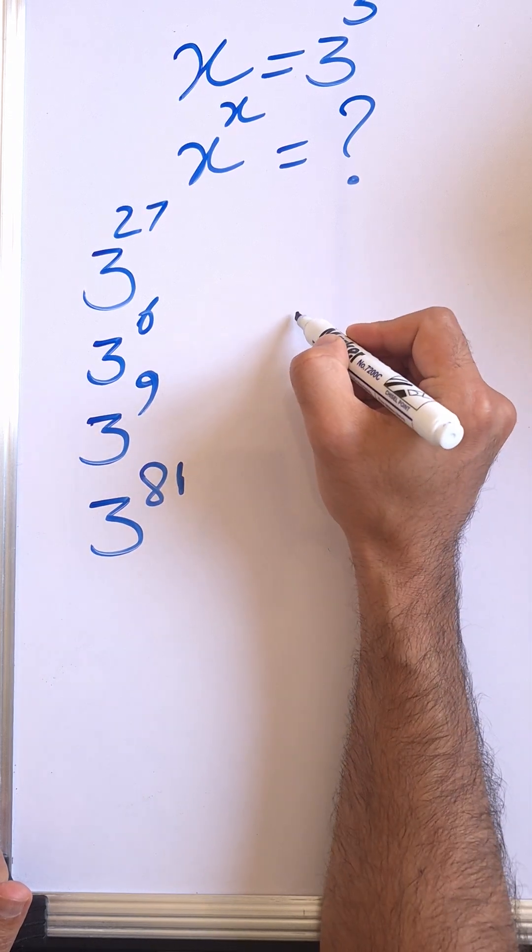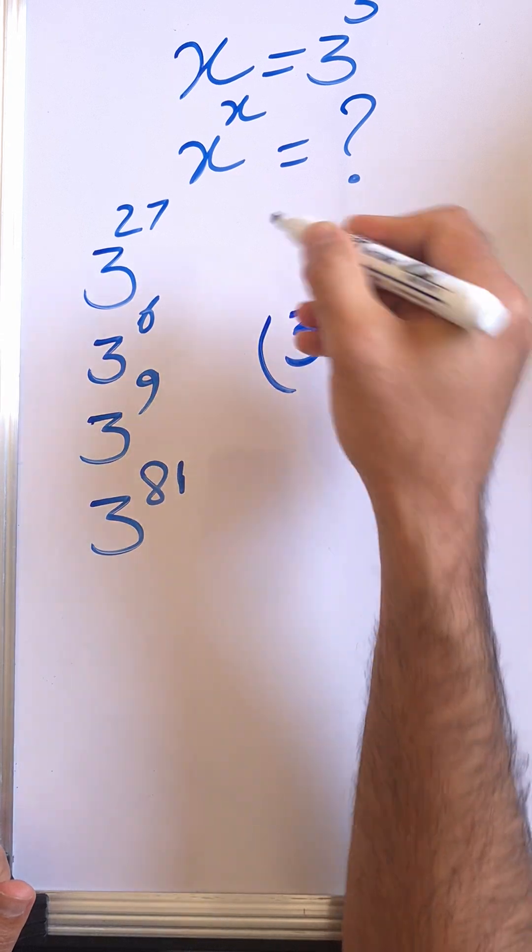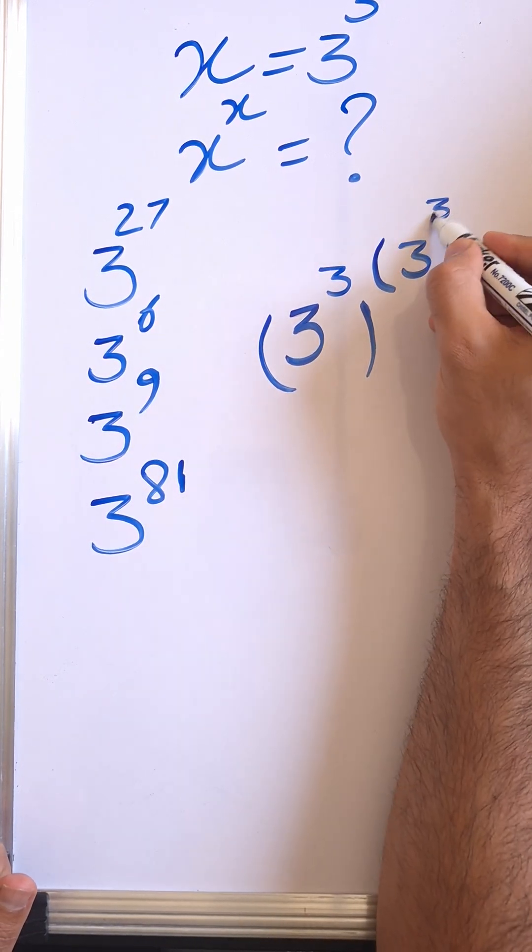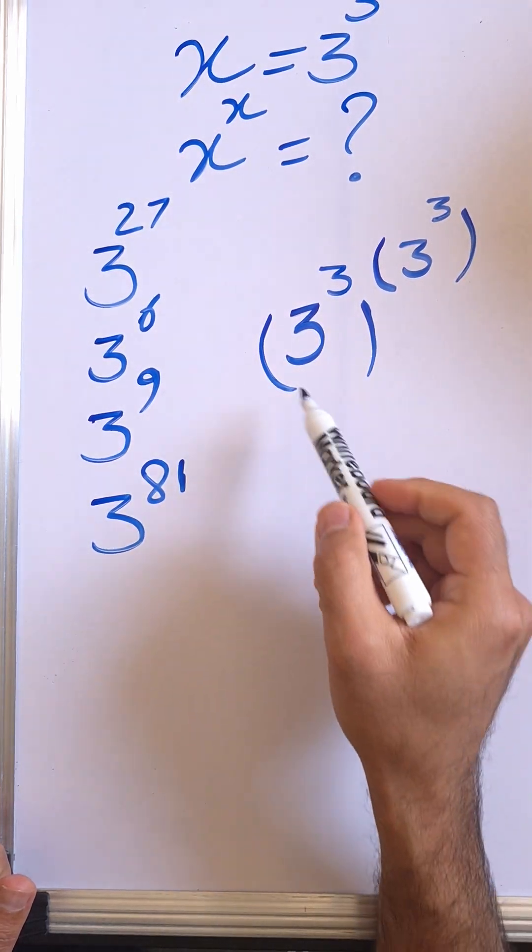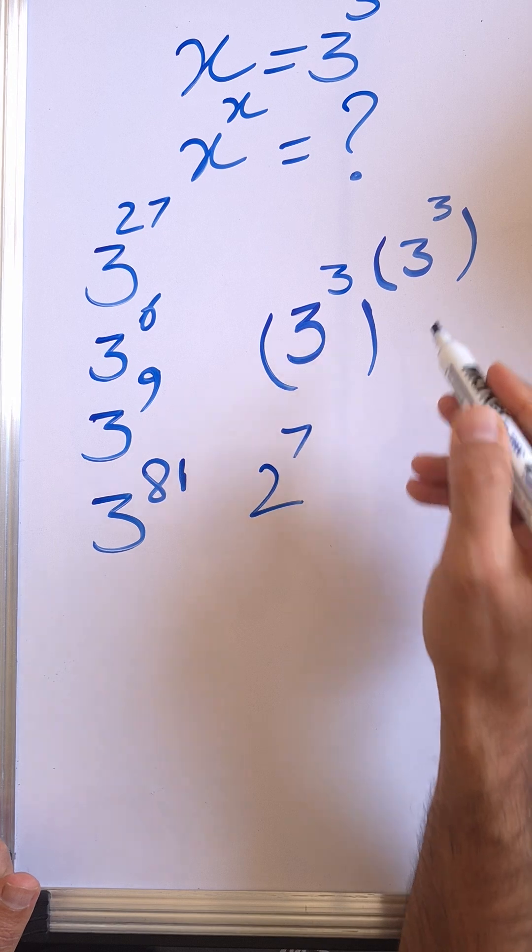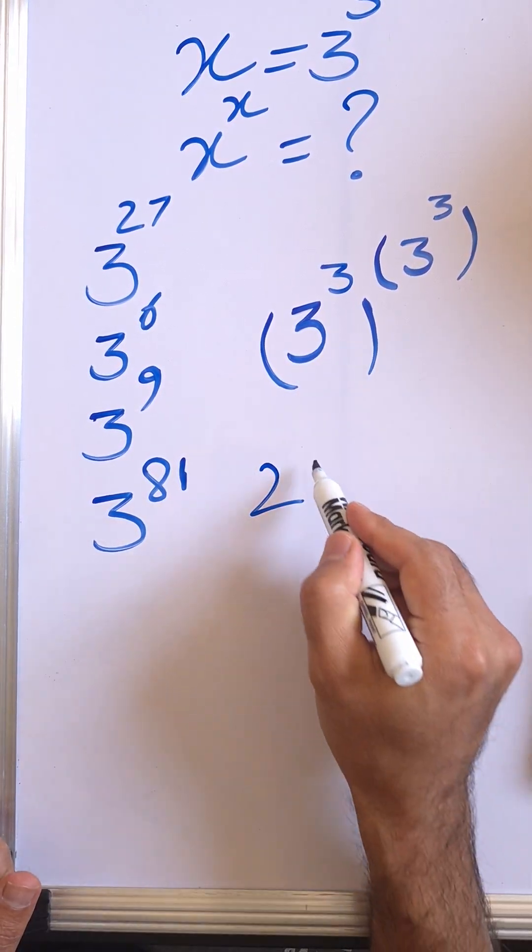So x equals 3 to the 3, and then to the power of x, to the 3 to the 3. So 3 to the 3 is just 27, and 3 to the 3 is also 27. That's the answer, but we don't have it among the options.